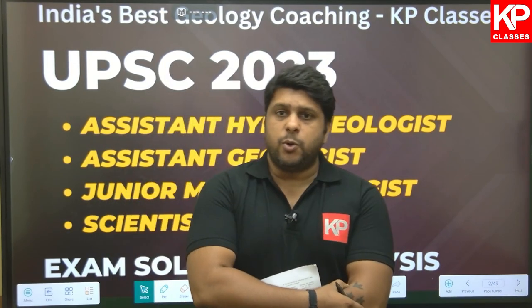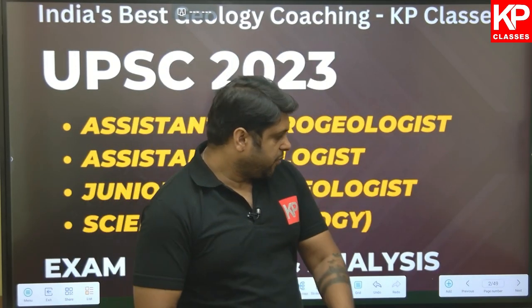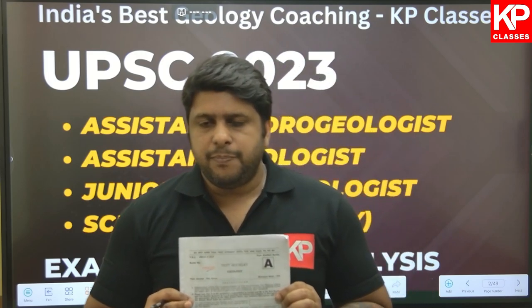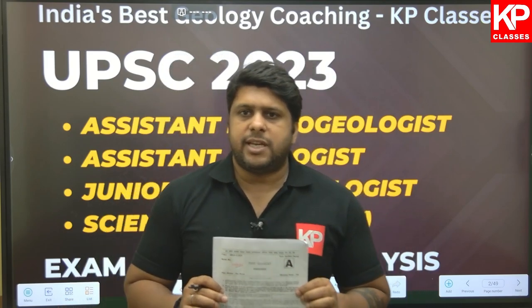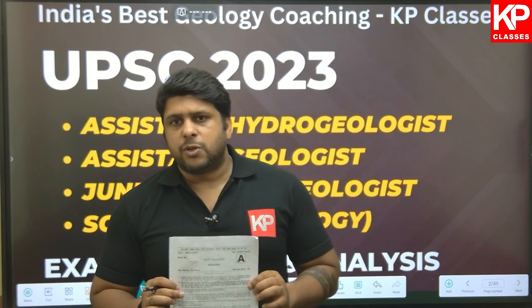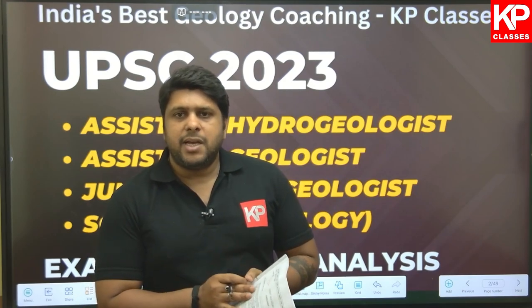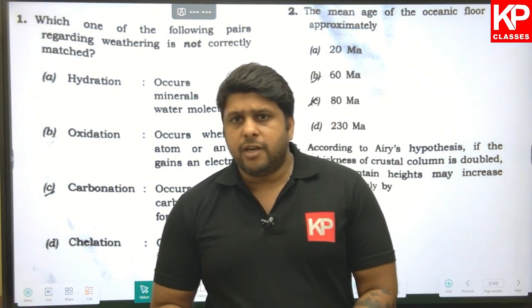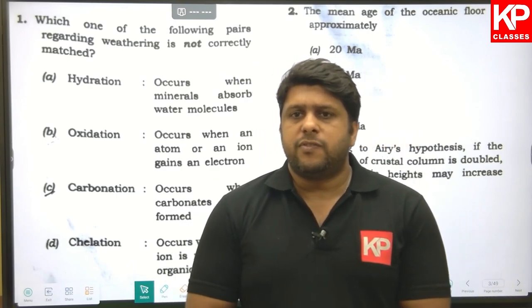Let's start with the solution part. Students who have not subscribed our channel yet, please subscribe and support us. In the exam there are four sets: Set A, Set B, Set C, and Set D. The questions are the same in every set but the arrangement is different, so you can match your answers according to your set. The first question is: which one of the following pairs regarding weathering is not correctly matched?